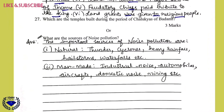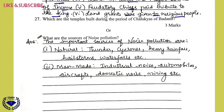Question 27: What are the sources of noise pollution, for three marks? The important sources are natural sources — those are thunder, cyclones, heavy rainfall, hailstorms, waterfalls, etc. The second category is man-made sources — industrial noise, automobiles, aircrafts, domestic noise, mining, etc.